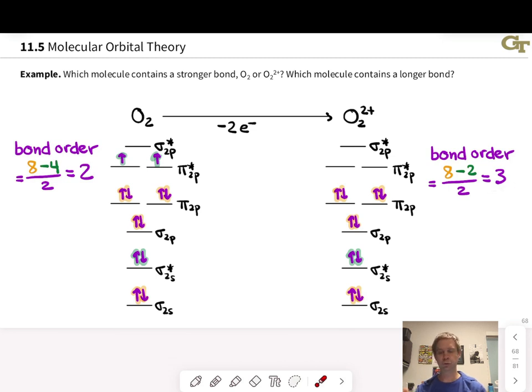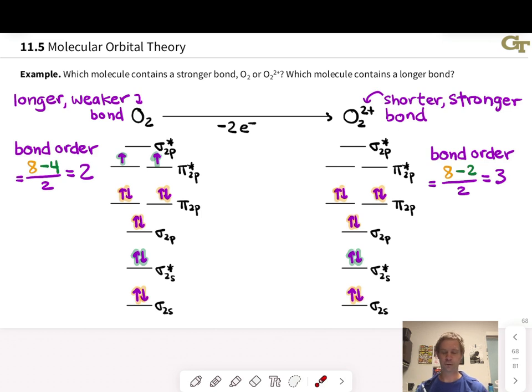The overall conclusion here is that the longer and weaker bond is in neutral O2, and the stronger and shorter bond is in O2 2+.